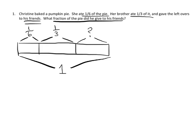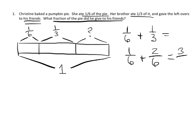Our strategy is to first add one-sixth plus one-third, then subtract. One-third is the same thing as two-sixths, so if we add those together we get three-sixths. Notice I jumped straight to the lowest common denominator.